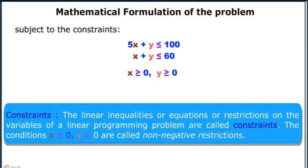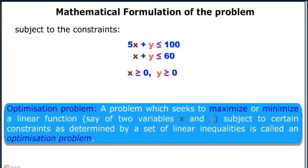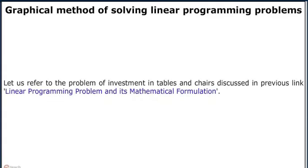Constraints: the linear inequalities or equations or restrictions on the variables of a linear programming problem are called constraints. The conditions x ≥ 0 and y ≥ 0 are called non-negative restrictions. An optimization problem seeks to maximize or minimize a linear function of two variables x and y, subject to constraints determined by a set of linear inequalities.